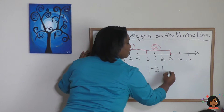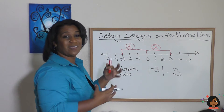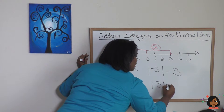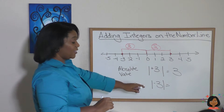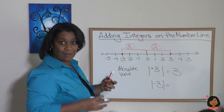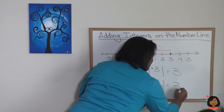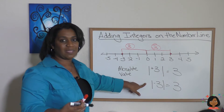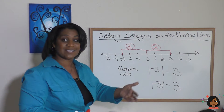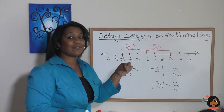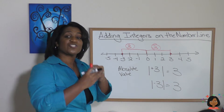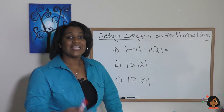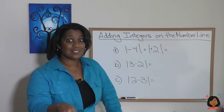The absolute value of positive three would be three — it's the value of the number without its sign. What if we had a negative three? The absolute value of negative three is still three, without its sign, without its direction. Any number's absolute value is going to be a positive number — it's stripped of its sign. So the absolute value of three and the absolute value of negative three are both three. Let's try a few examples to make sure you get it.